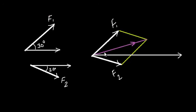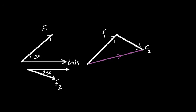Now complete the parallelogram by drawing parallel lines to f1 and f2. The maximum diagonal of this parallelogram gives you the resultant vector of f1 and f2. You can find the angle of the resultant by measuring the angle it makes with the x-axis, and the magnitude is the length of the resultant. You can also use the triangular law, which is derived from the parallelogram law, to find the resultant of two vectors.